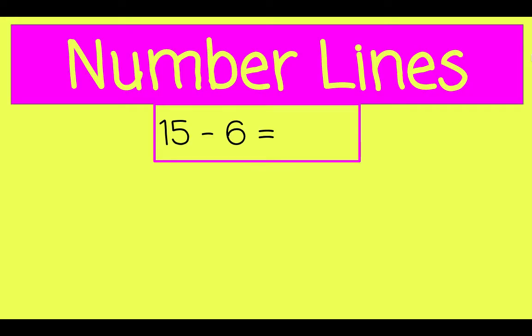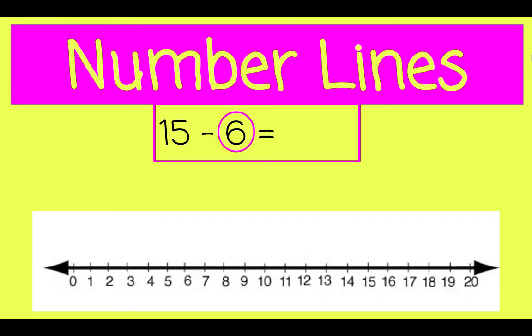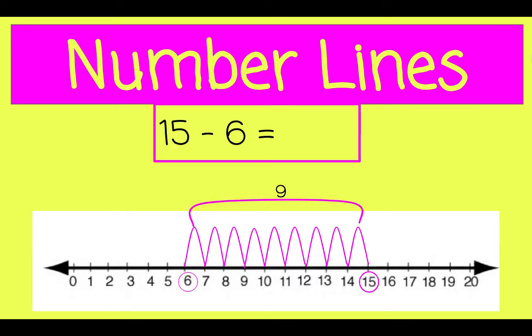Let's look at that same question from a new perspective. Sometimes jumping backward or counting backward can be a little tricky, so let's jump forward or count up. Let's begin on 6, and count up to 15. The number of jumps we take is our answer. There's 1 jump, 2, 3, 4, 5, 6, 7, 8, 9. We made 9 jumps to take us to 15. That means our answer is 9.